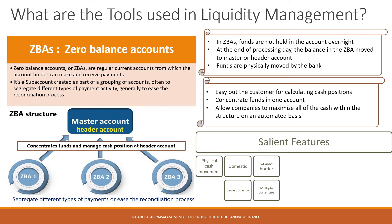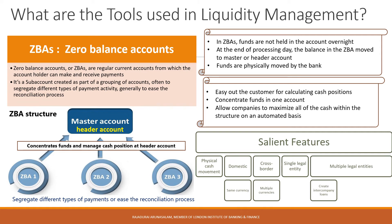Additionally, zero balance accounts owned by a single legal entity are easier to manage than those owned by multiple legal entities such as subsidiaries of a parent company. This is because the physical movement of cash within a ZBA structure that includes multiple legal entities creates intercompany loans, which can lead to tax consequences and accounting issues for a corporation. In any case, zero balance accounts are very popular and provide an effective way to manage cash in many countries.